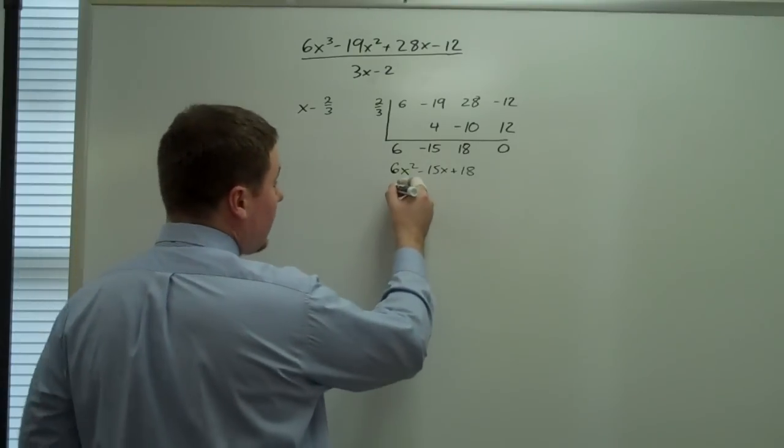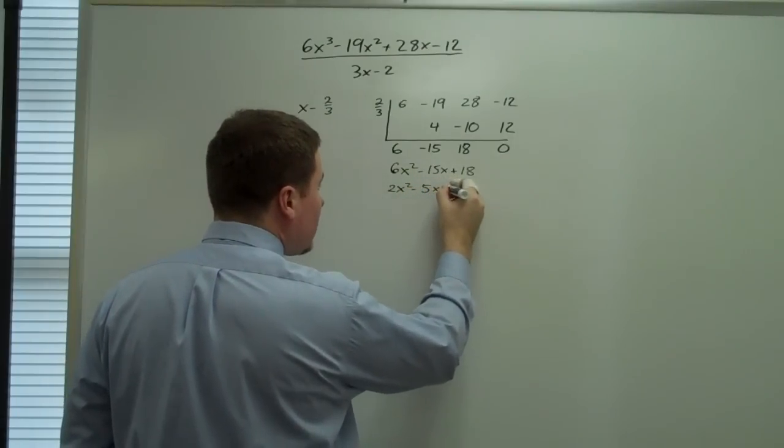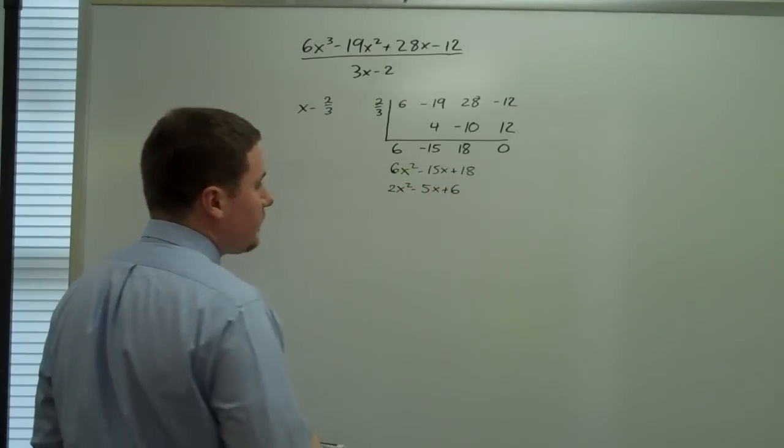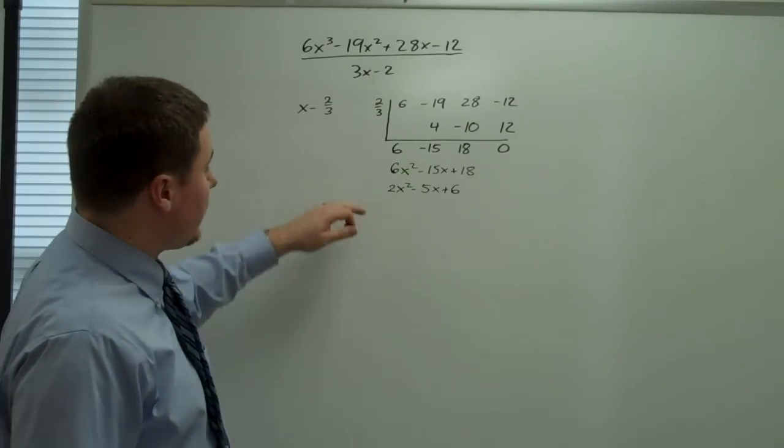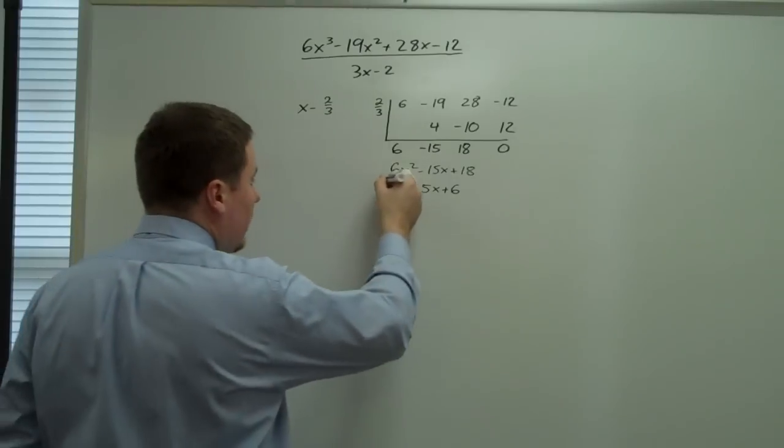So we need to factor that out. Our answer is really going to be 2x squared minus 5x plus 6. That's the difference between dividing by this and by this. But this is our final quotient.